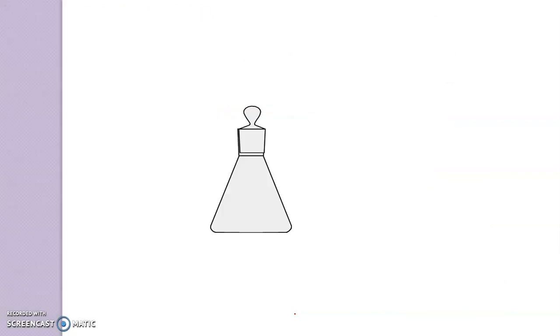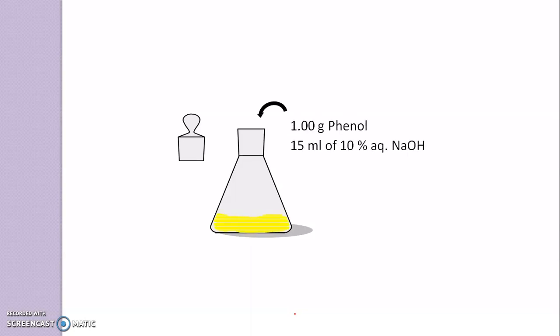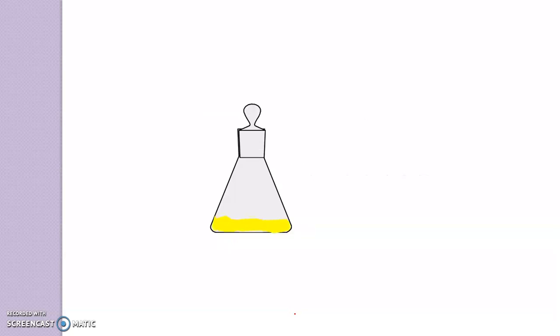Next is the procedure. Take a wide mouth bottle or iodine flask. Dissolve 1 gram of phenol in 15 ml of 10% sodium hydroxide solution. Add 2 ml of benzoyl chloride. Cork the bottle and shake the mixture vigorously for 15 minutes. At the end of this time, the reaction should be complete and solid product obtained.